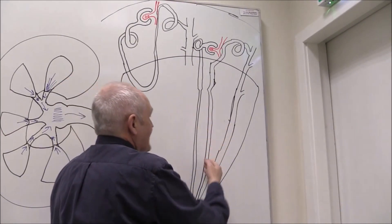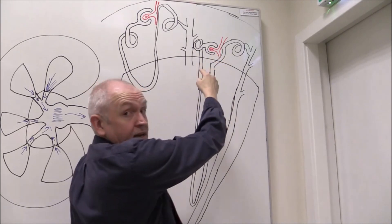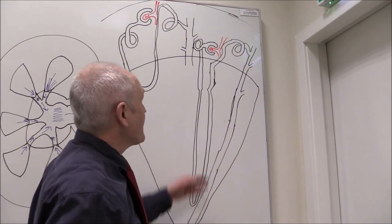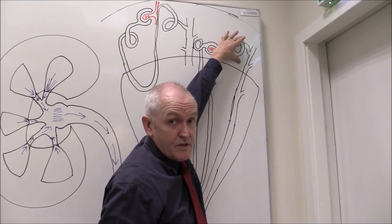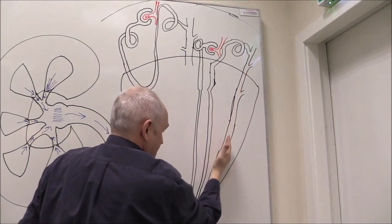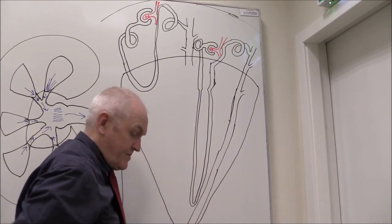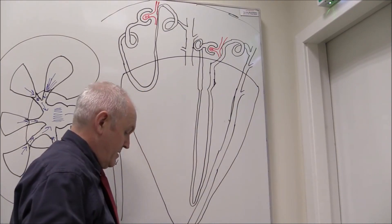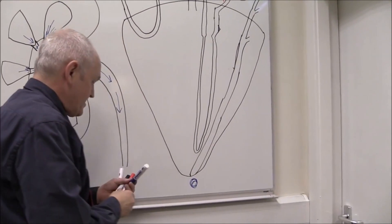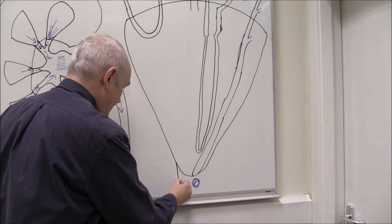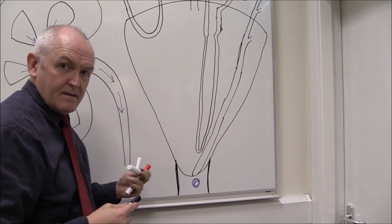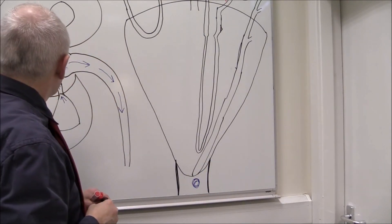As the ascending loop comes back up, it gets thicker again. It passes very close to the afferent arteriole, goes into a second or distal convoluted tubule. Anything that's not reabsorbed is going to go into the collecting duct. Eventually, when it comes out at the base, it's going to be urine — a drop of urine formed, and that is going to pass directly into a minor calyx associated with that particular medullary pyramid.